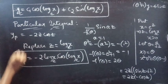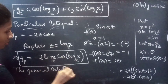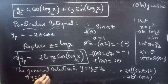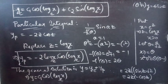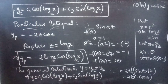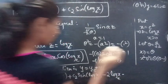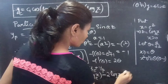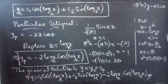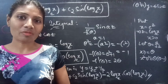Now let's write the general solution y equals yc plus yp: y equals c1 cos(log x) plus c2 sin(log x) minus 2 log(x) cos(log x). This is the required general solution. We have seen a problem from Cauchy's equation in this video. Hope you understand — we'll see you in the next video, until then bye bye.